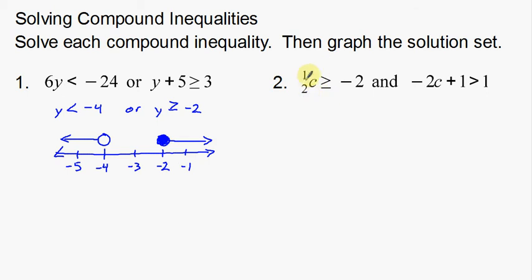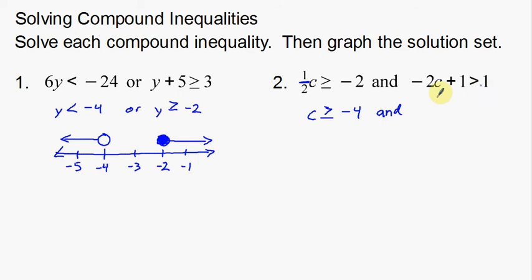This side — this is supposed to be one-half c, greater than or equal to negative 2. So I'm going to multiply both sides by 2. C is greater than or equal to negative 4. And now I'm going to solve the other inequality. This one's going to take a couple of steps — I have to subtract 1 from both sides. Negative 2c is less than 0. Now this gets a little tricky: I have to divide both sides by negative 2.